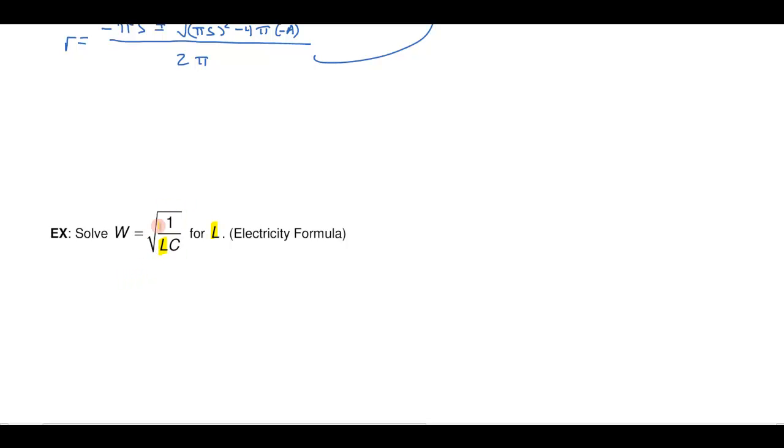I have to somehow get rid of the square root first of all. So let's just square both sides. So if I square both sides that will give me W squared is equal to 1 over LC. Well now I have an equation with fractions so let's multiply to get rid of the fractions. So multiply both sides by LC.